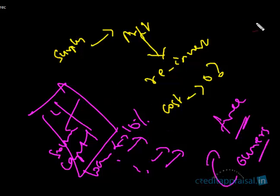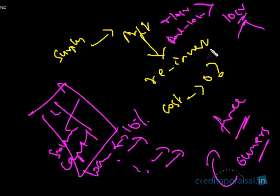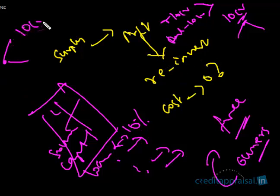In various ratios and ratio analysis, you will encounter terms like TOL/TNW. TNW stands for Tangible Net Worth. Net worth is capital plus reserves and surplus. To calculate tangible net worth, we need to consider items like accumulated losses. All losses must be borne by the owners. For example, if a company started with capital of 10 lakhs and made a loss of 2 lakhs this year, the effective net worth is only 8 lakhs, because the loss erodes the owners' capital.